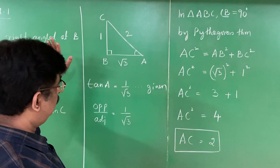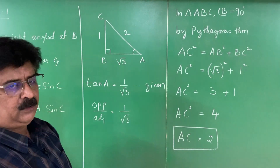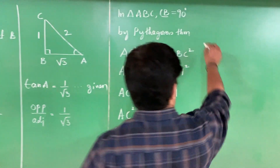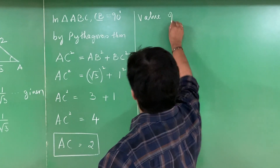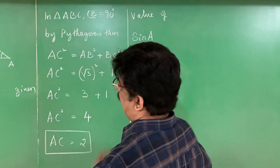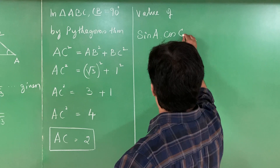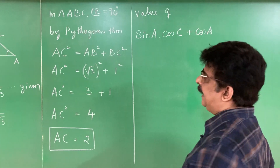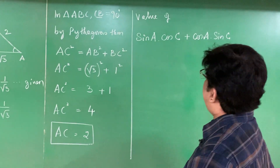Now all three sides are known, so I can write any trigonometric ratio for angle A and angle C. The first value wanted is sin A · cos C + cos A · sin C. With respect to angle A, sin theta means opposite by hypotenuse, which is 1 by 2. With respect to angle C, cos theta means adjacent by hypotenuse, which is 1 by 2. With respect to angle A, cos theta is adjacent by hypotenuse, which is root 3 by 2. With respect to angle C, sin theta is opposite by hypotenuse, which is root 3 by 2.